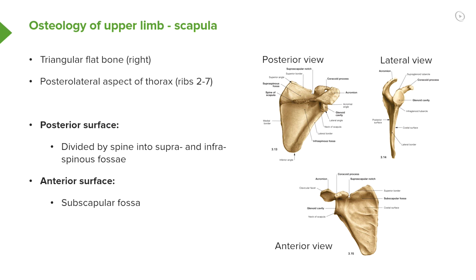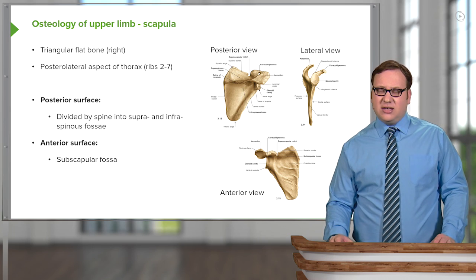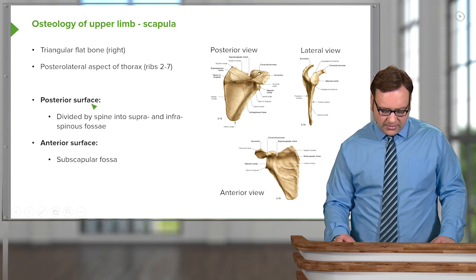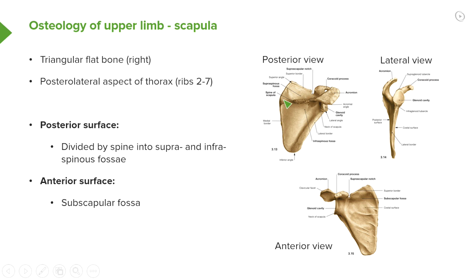Let's look at some features of the scapula. It is a flat bone, and it sits on the posterolateral aspect of the thorax at the level of ribs 2 to 7 — directly posterior to the ribcage. The posterior surface, which we can see here, is divided by this prominent ridge.